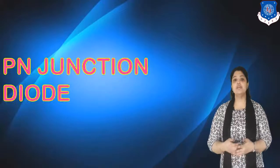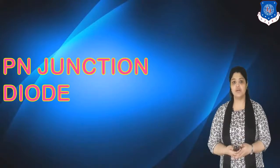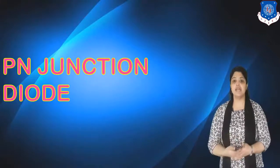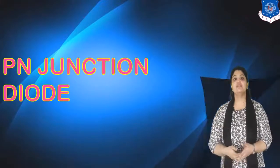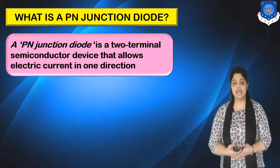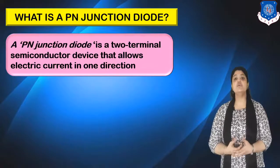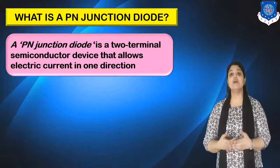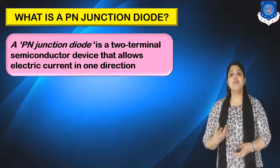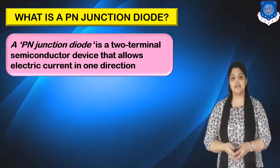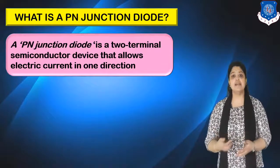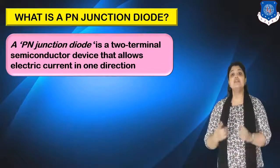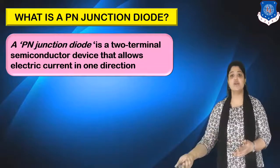In today's video, we are going to discuss about a PN junction diode. Starting with the PN junction diode — what is a PN junction diode? A PN junction diode is a two terminal semiconductor device which allows electric current to flow only in one direction. It is formed by using P type and N type semiconductors, and it permits current to flow only in one particular direction.